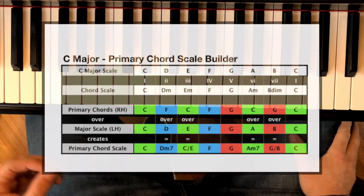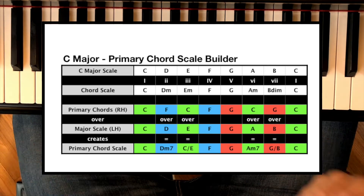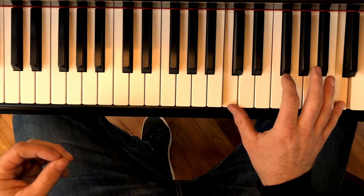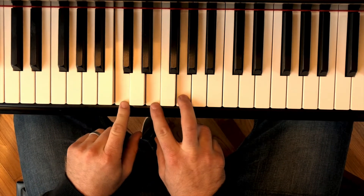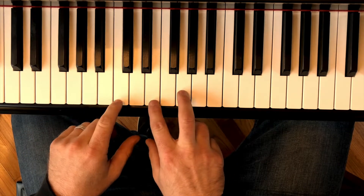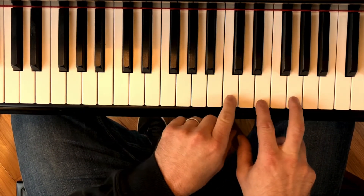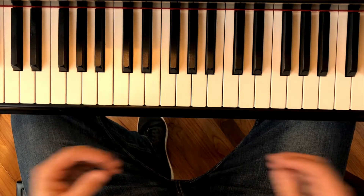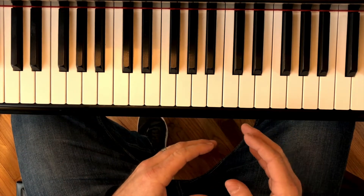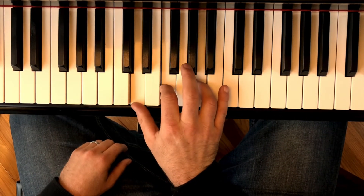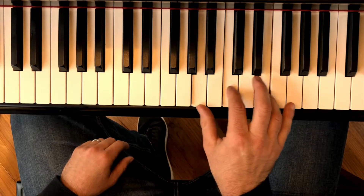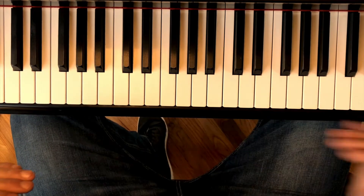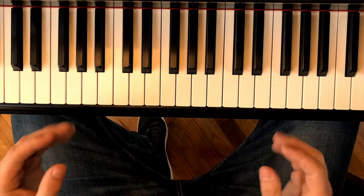Let's put this into practice. When you open a primary chord scale builder, the first line is the major scale. We're working in C because it's easy to understand. That's just a river of white notes from C to C. When we build the chord scale, you take the first note of the scale and build it in thirds, making sure everything stays in the key of C — only white keys. That creates a mixture of major and minor triads: I, IV, and V are major; II, III, and VI are minor; and the VII chord is diminished. So: C major, D minor, E minor, F major, G major, A minor, B diminished, C. That pattern is consistent across all keys.